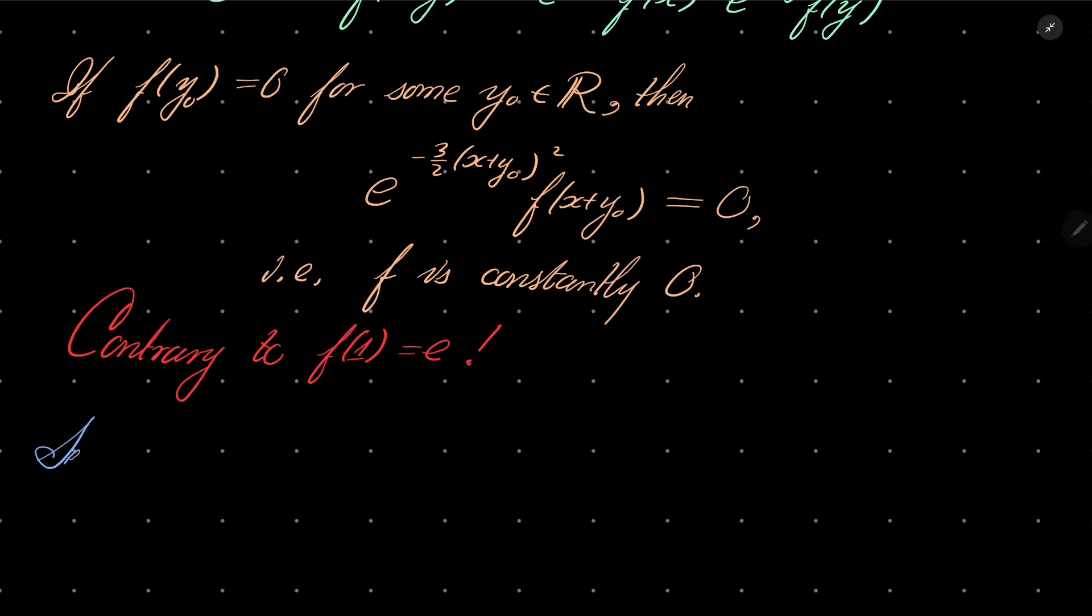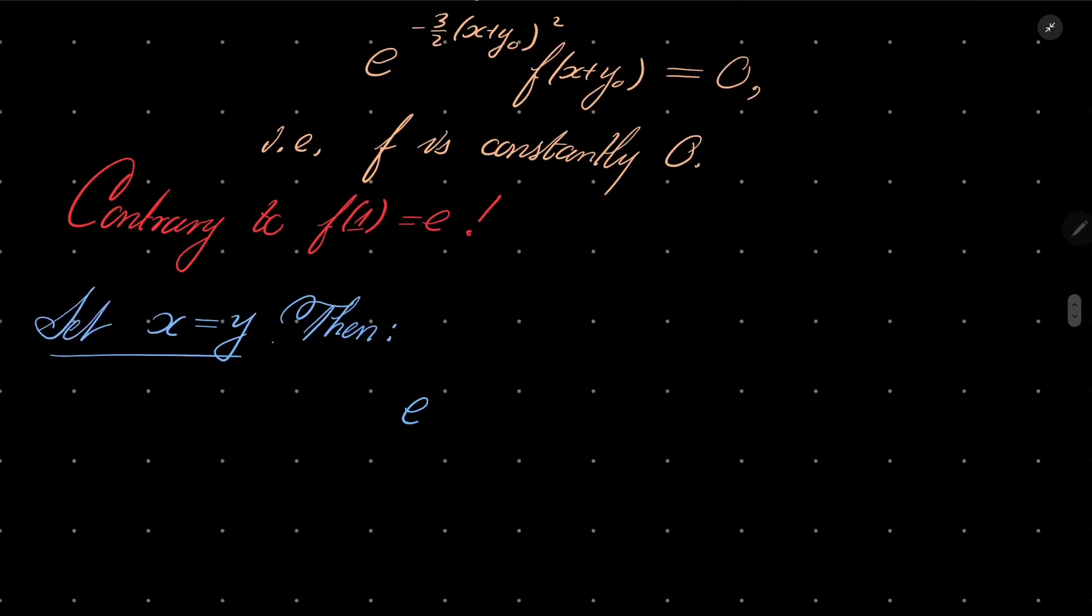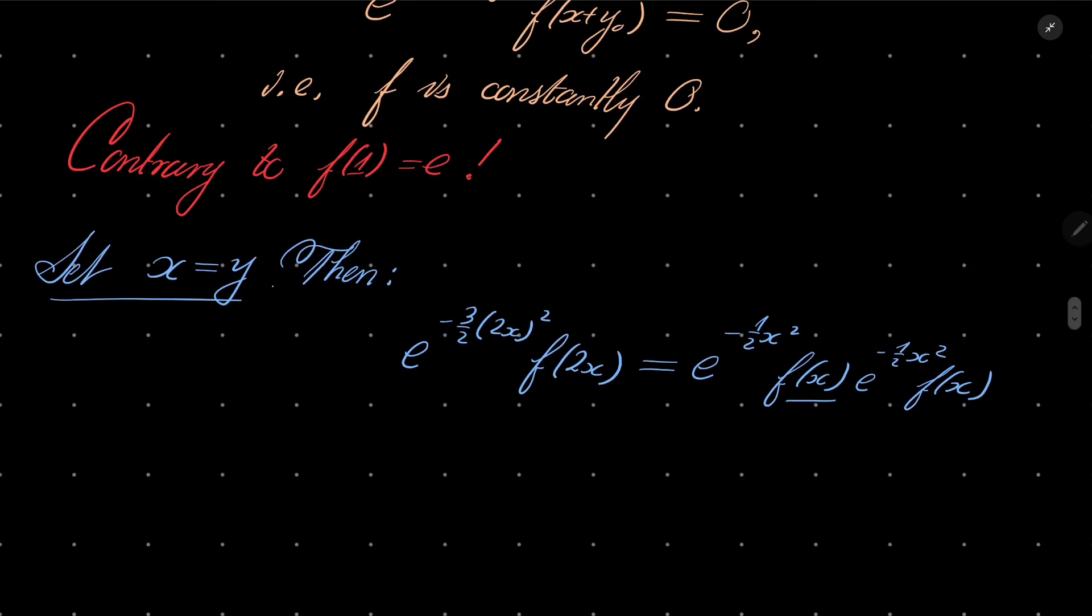Then we have the following. e to the power minus 3 over 2(2x) squared f(2x) equals e to the power minus 1 half x squared f(x), e to the power minus 1 half x squared f(x). And now, notice something, that f(x) times f(x), it's a square, and we know that it's not 0. So it must be positive. The entire right hand side is positive. It cannot be 0, because we have established that f does not attain the value of 0.